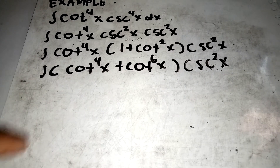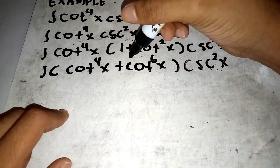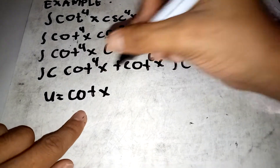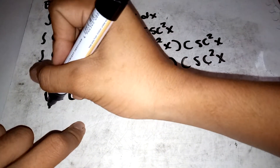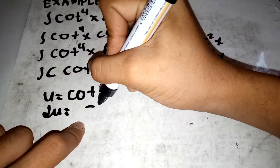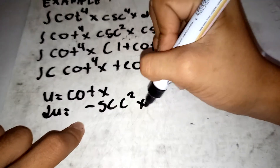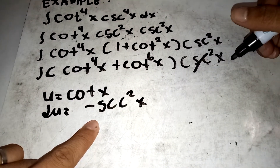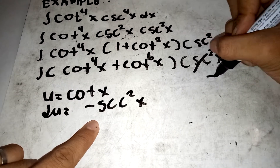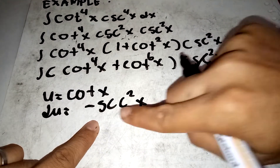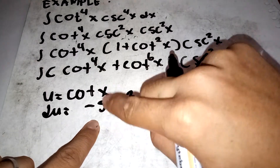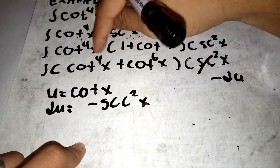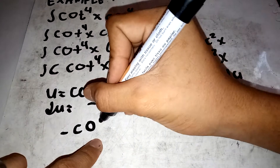Now we can integrate. Let u equal cotangent x, then the derivative of cotangent x is negative cosecant squared x. We can cancel the cosecant squared x and replace it with negative du, since the derivative of cotangent is negative cosecant squared x. Multiplying the negative through gives negative cotangent to the fourth x and negative cotangent to the sixth x.